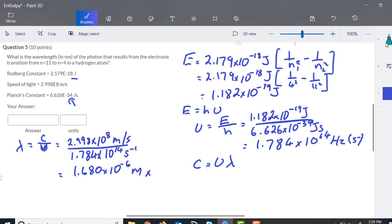But we need nanometers here, and the information we have is 1 nanometer is equal to 10 to the negative 9 meters, and that's going to give us 1,680 nanometers. Just put a dot in there to make it four significant figures.